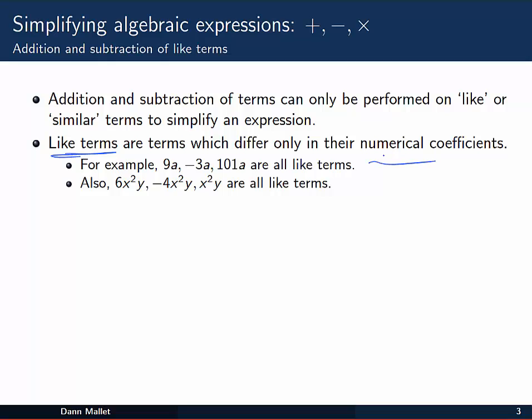So some easy ones to look at are here in the first bullet point. 9a, minus 3a, and 101a, they're all like terms because they only differ in the number that's multiplying a. So we could combine them through addition and subtraction if they were in an expression of that form.